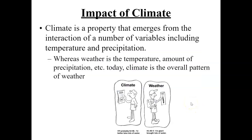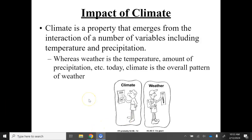Climate is very different from weather. Weather is what's happening in the moment — for example, right now it's 70 degrees outside, humidity is low, and precipitation is zero. Climate is an overall pattern of weather looked at over periods of time — last year, the past decade, the past century. We're looking for patterns of weather over time.